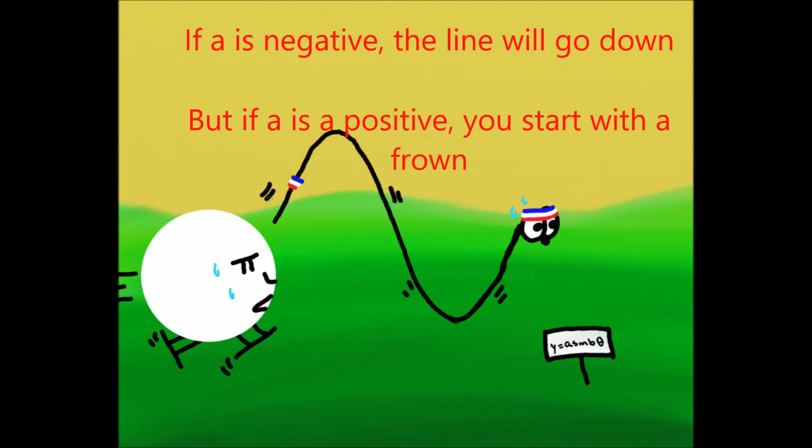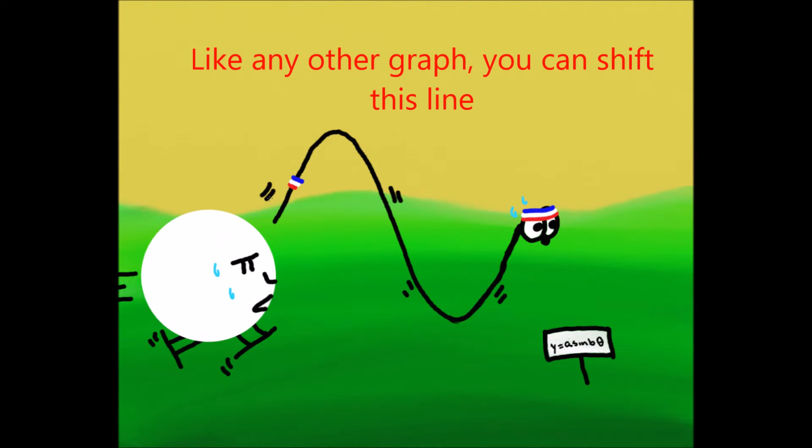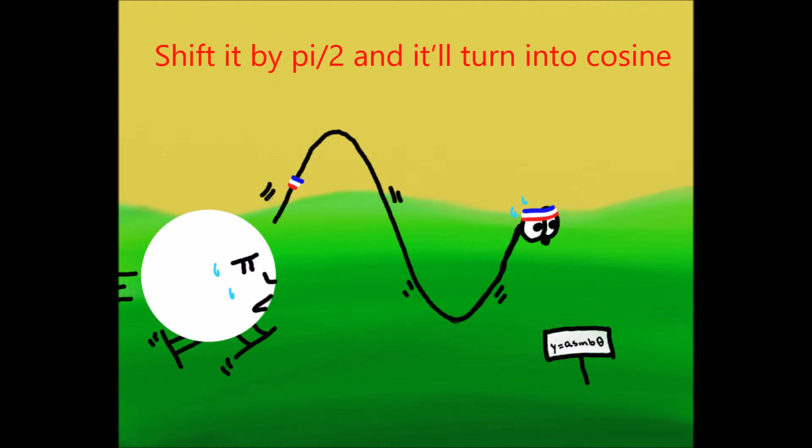If it is negative, the line will go down, but if it is positive, you'll start with a frown. Like any other graph, you can shift this line, shift it by pi over 2, and it will turn into cosine.